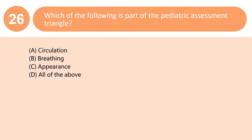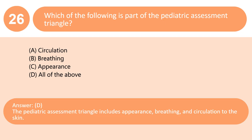Which of the following is part of the pediatric assessment triangle? A. Circulation. B. Breathing. C. Appearance. D. All of the above. Answer: D. The pediatric assessment triangle includes appearance, breathing, and circulation to the skin.